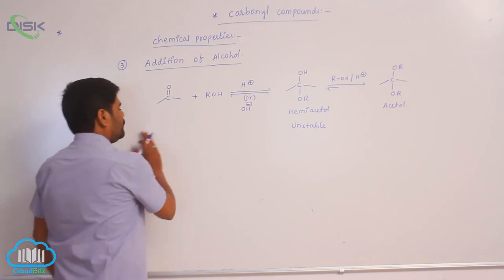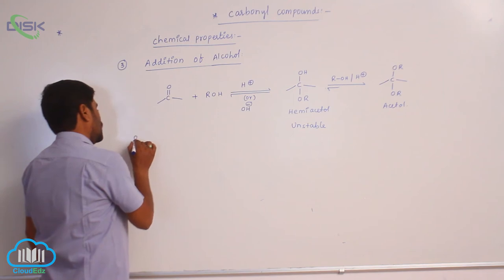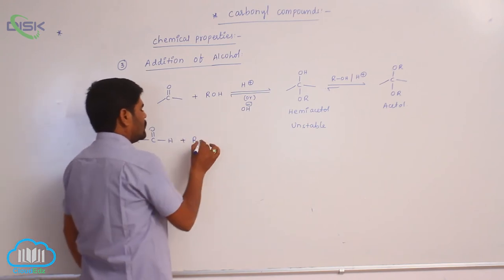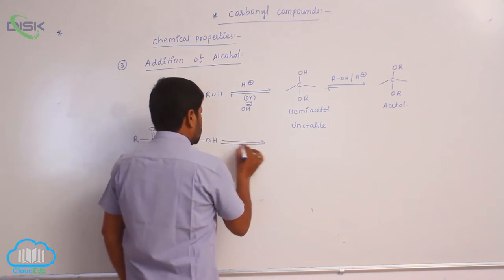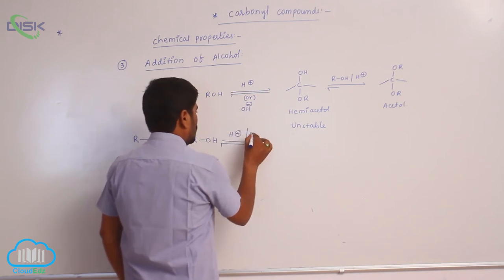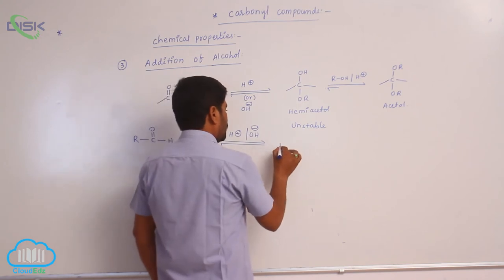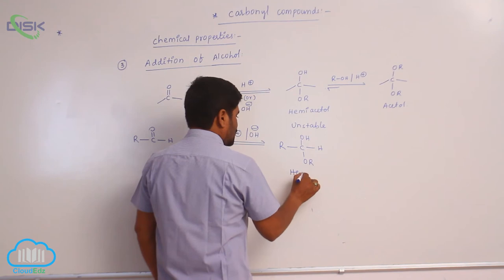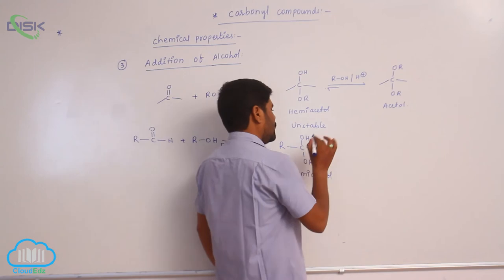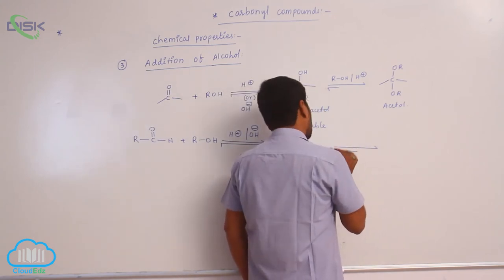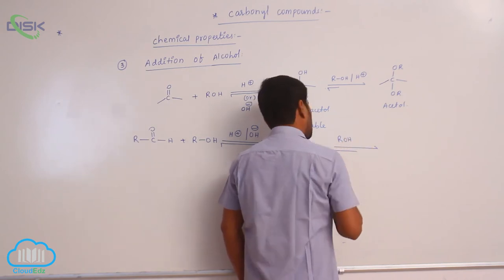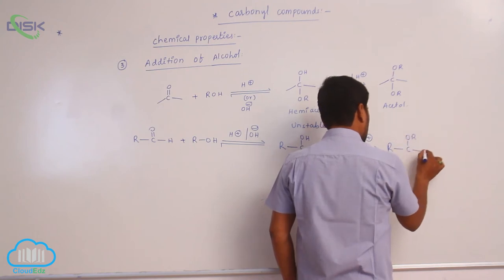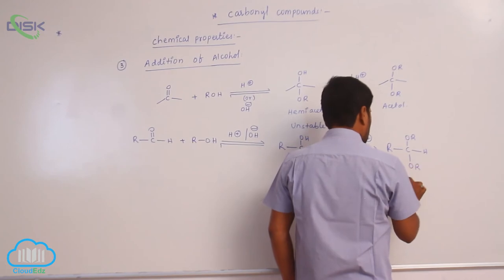Now, if you are taking an aldehyde — a C double bond O — when an aldehyde reacts with an alcohol in the presence of acid medium or basic medium, it forms a compound with OR, OH, and R groups. This is known as a hemiacetal. The product with OR and H groups is known as a hemiacetal.